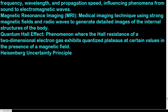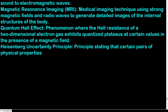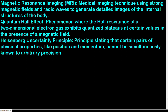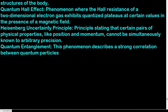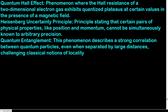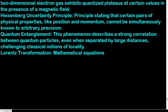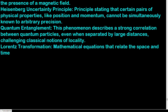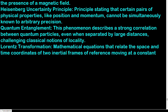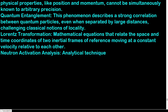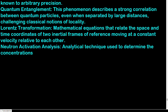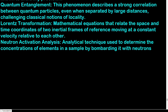Heisenberg uncertainty principle: principle stating that certain pairs of physical properties, like position and momentum, cannot be simultaneously known to arbitrary precision. Quantum entanglement: phenomenon describing a strong correlation between quantum particles, even when separated by large distances, challenging classical notions of locality. Lorentz transformation: mathematical equations that relate the space and time coordinates of two inertial frames of reference moving at a constant velocity relative to each other. Neutron activation analysis: analytical technique used to determine the concentrations of elements in a sample by bombarding it with neutrons and measuring the resulting radiation.